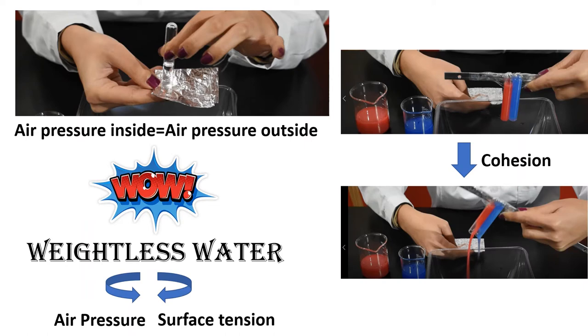When the seal is broken, air enters into the tube, equalizes the pressure, and gravity pushes the water out.